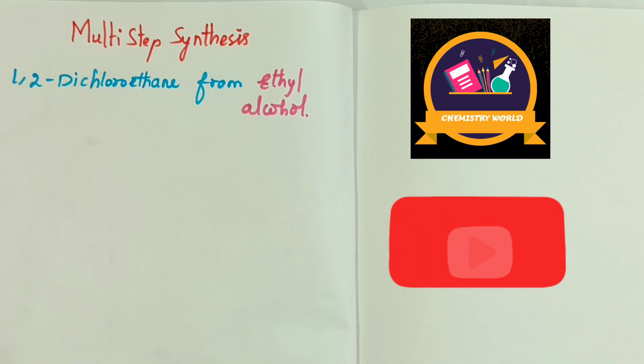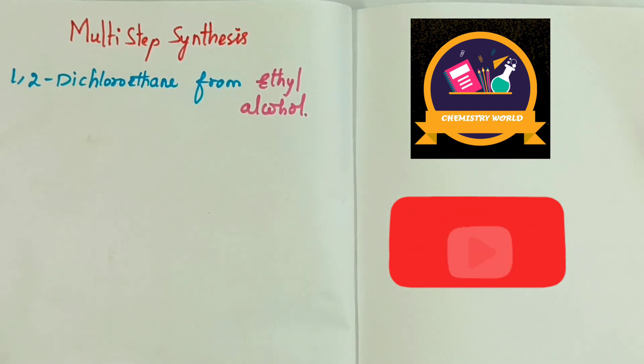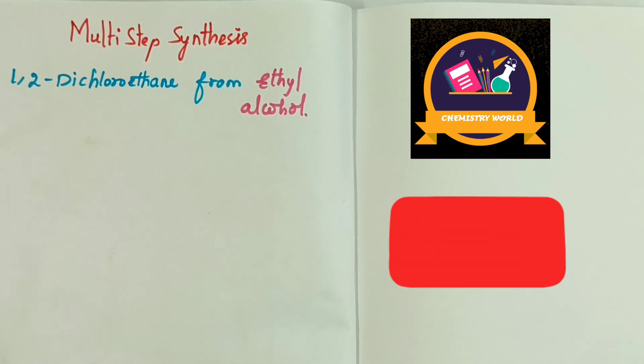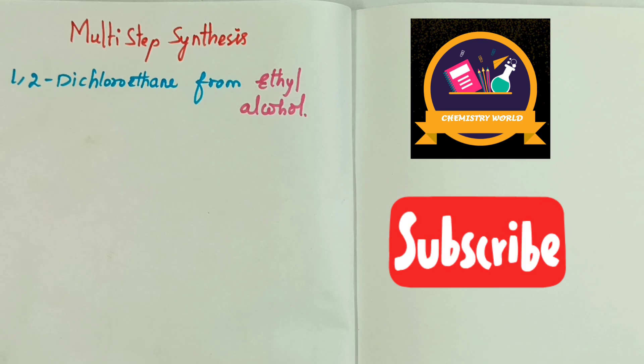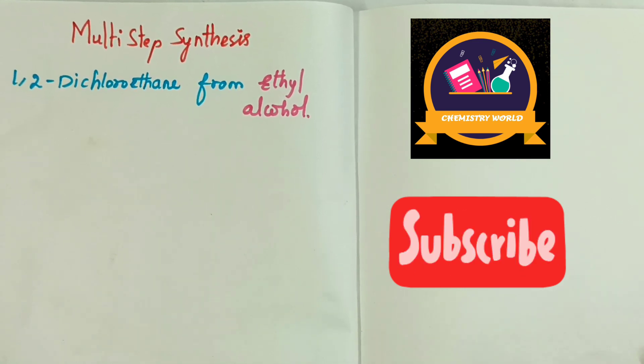We see multi-step synthesis in organic chemistry. We see the naming reactions: Kolbe reaction, Cannizzaro reaction, Hunsdiecker reaction. There are many naming reactions in organic chemistry. Why do we see an organic compound synthesis? What do we see in this multi-step synthesis?